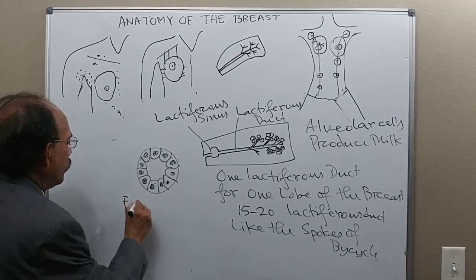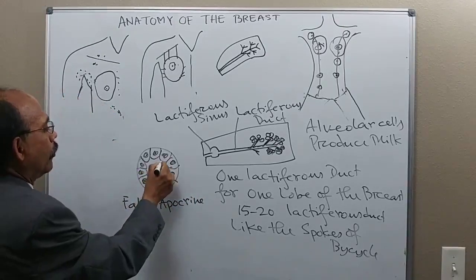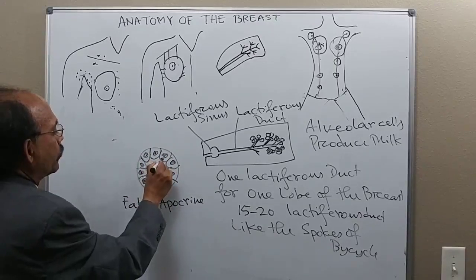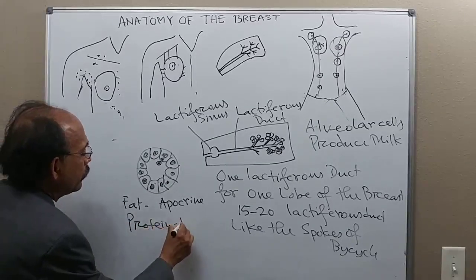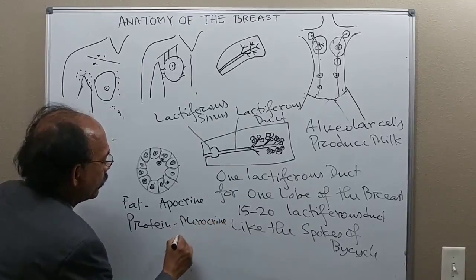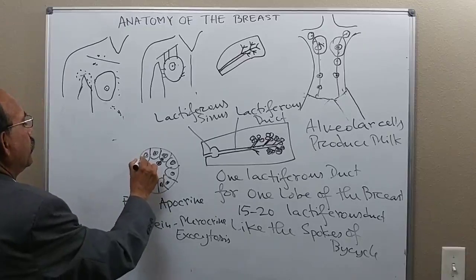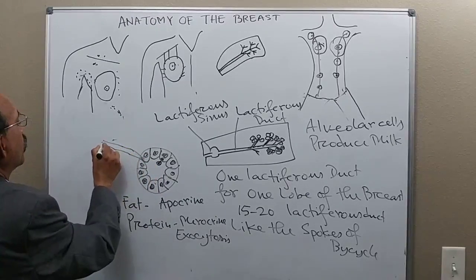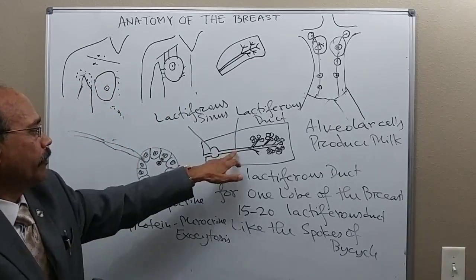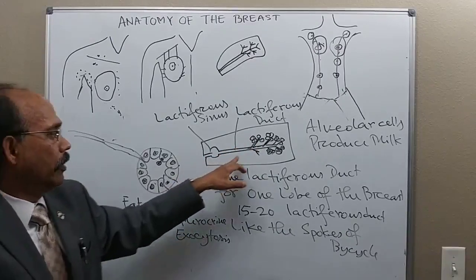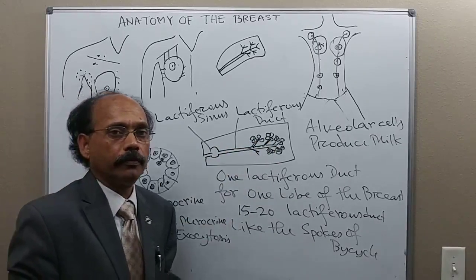The secretion of fat from alveolar cells is apocrine secretion — a part of the cell membrane is lost. The secretion of protein is merocrine, similar to exocytosis. From there, the ductule goes to the terminal lobular ductule and then to the lactiferous duct. Clinically, almost all breast cancers develop in the lining epithelium of the lactiferous ducts.